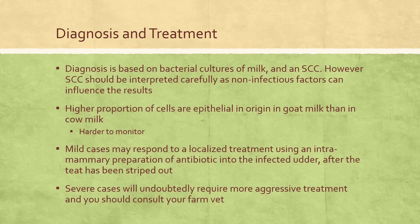Diagnosis of mastitis in the dairy goat is based on bacterial cultures of milk and a somatic cell count test. However, the somatic cell count test should be interpreted carefully, as there is poor discrimination between infected and non-infected animals, especially in the later stages of lactation. This is partially because there is a higher proportion of cells that are epithelial in origin in goat milk than in cow's milk, making it harder to monitor in dairy goats than in cattle.